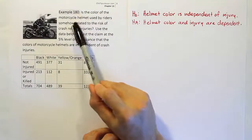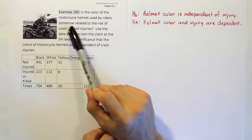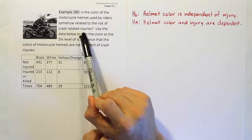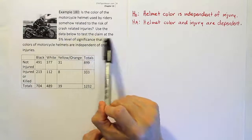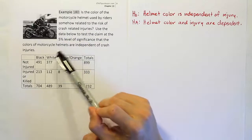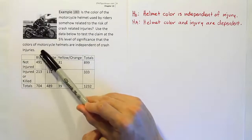Example 180. Is the color of the motorcycle helmet used by riders somehow related to the risk of crash-related injuries? Use the data below to test the claim at the 5% significance level that the colors of motorcycle helmets are independent of crash injuries.